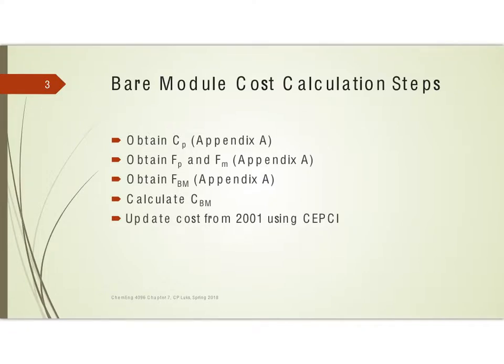The basic steps are that you're going to go to Appendix A of the textbook and you're going to find the C sub P. And then you're going to look for F sub P, which is a pressure factor, and F sub M, a materials factor. And then use that to get an F sub bare module, BM. And then use that to calculate the bare module cost. And then of course, whatever cost you get is going to be in 2001 dollars, and so update that using CEPCI values.